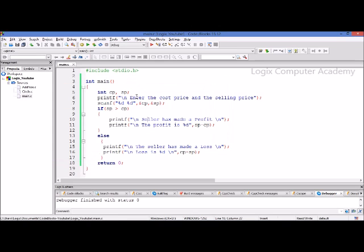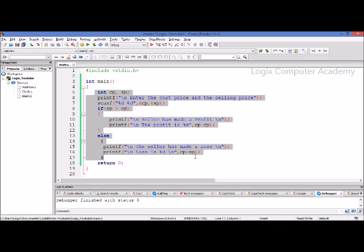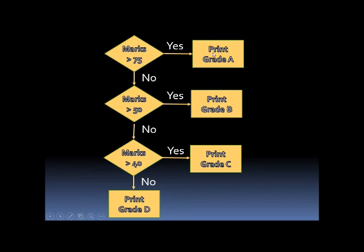There are many forms of the if statement, and another form is the if-else ladder. Let's write an example, but before that I'd like to show you the flowchart. Suppose we enter the marks of a student and want to print the grade. If the marks are 75 or above, print grade A. If not, if the marks are greater than 50, print grade B. If not, if the marks are greater than 40, print grade C. And if all these conditions are not true, print grade D. This is written with the help of an if-else ladder.